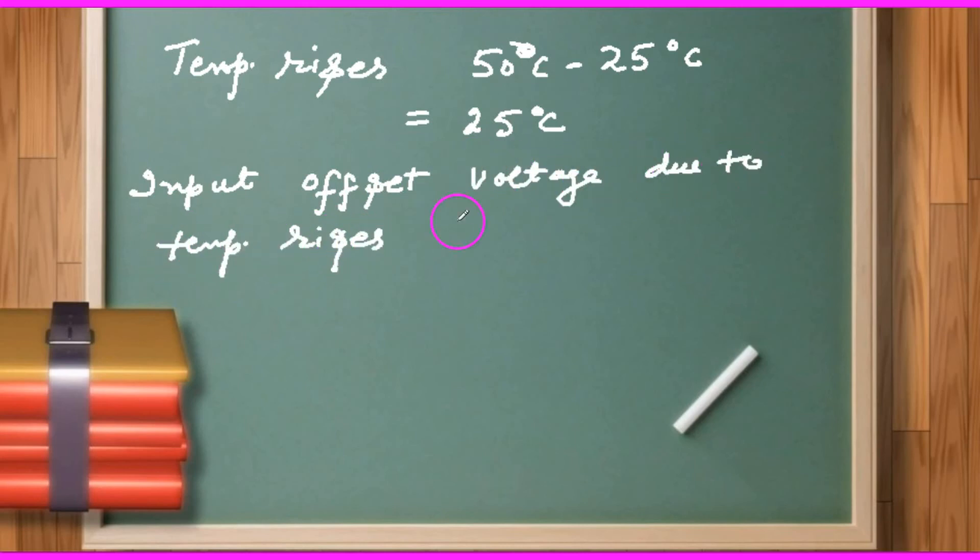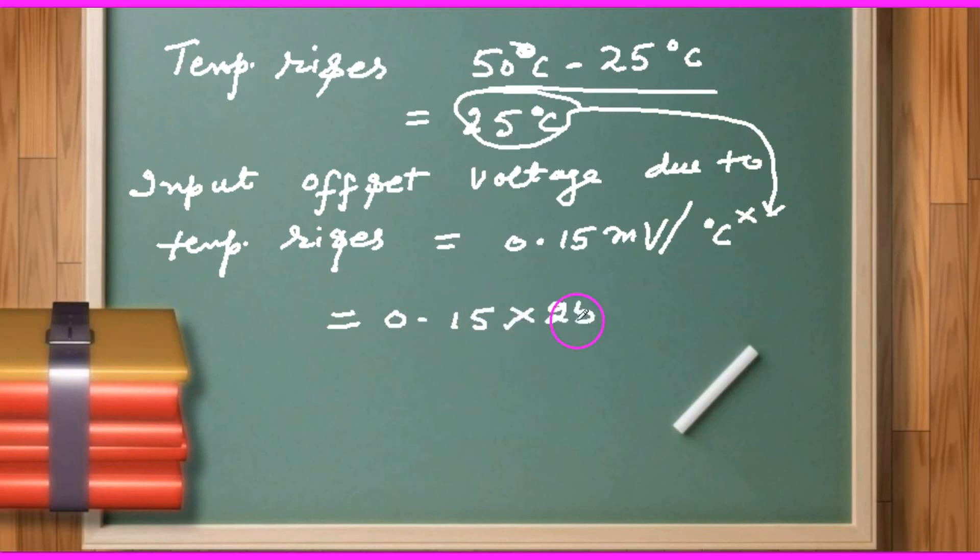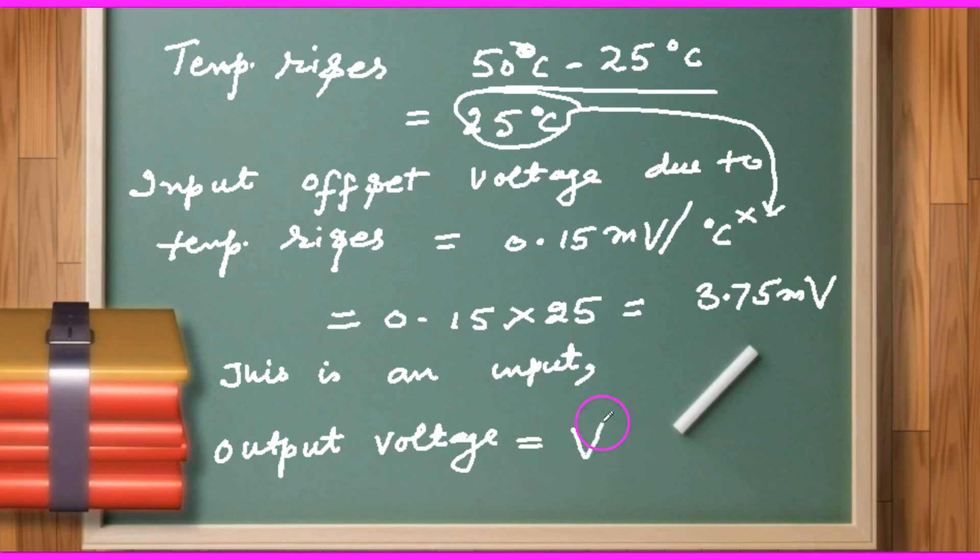Input offset voltage due to the temperature rise is given 0.15 millivolt per degree Celsius. For one Celsius, it is 0.15. For 25 degrees Celsius, it becomes 3.75 millivolt. This is input offset voltage. And output will be 3.75 into 100, that becomes 375 millivolt.